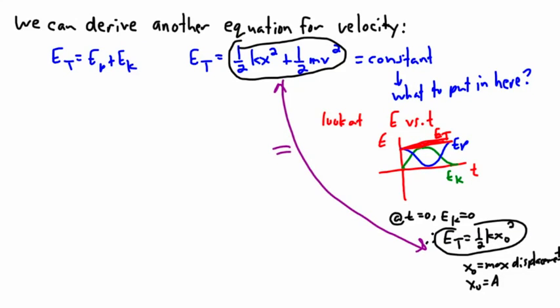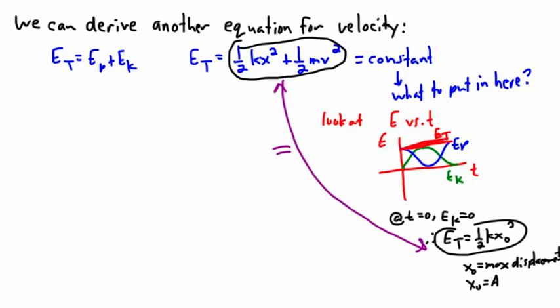So this right here and this right here, I'm going to set these two equal to each other. So I can say, therefore, I have half kx squared plus half mv squared equals half kx zero squared.